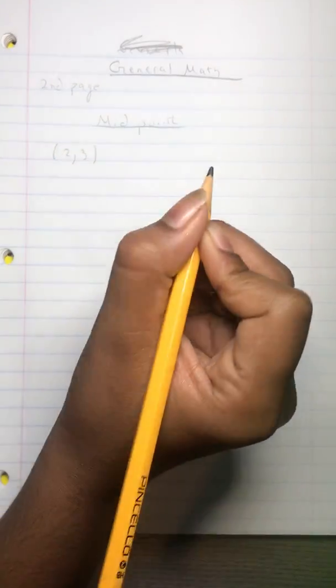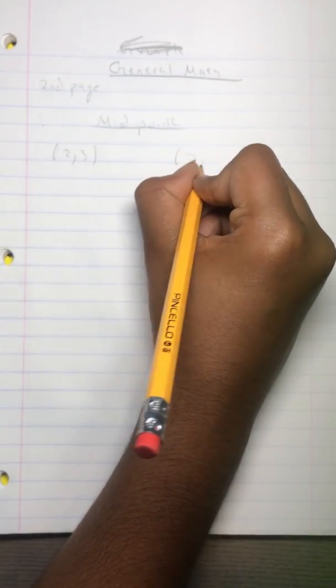Let's say you have a point as 2, 3, and you have another point as 7, 8.